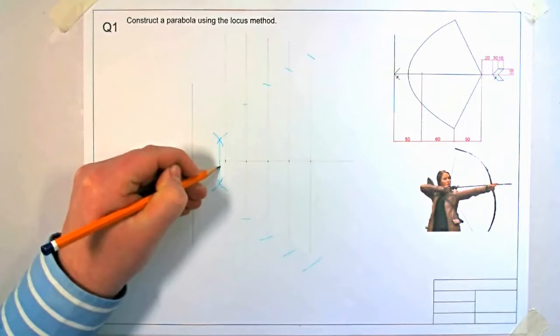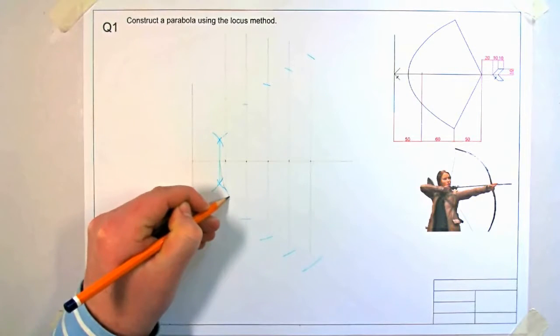Then from this we have all our points located. So we can freehand sketch in a parabola.